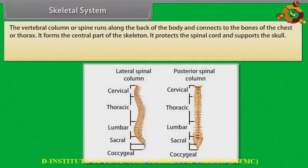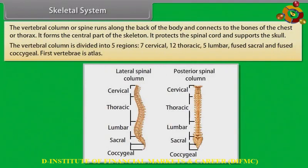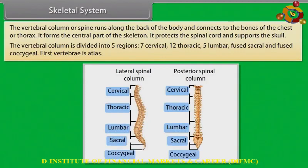The ear contains three tiny bones — malleus, incus, and stapes — called ear ossicles. The vertebral column or spine runs along the back of the body and connects to the bones of the chest or thorax. It forms the central part of the skeleton, protects the spinal cord, and supports the skull.